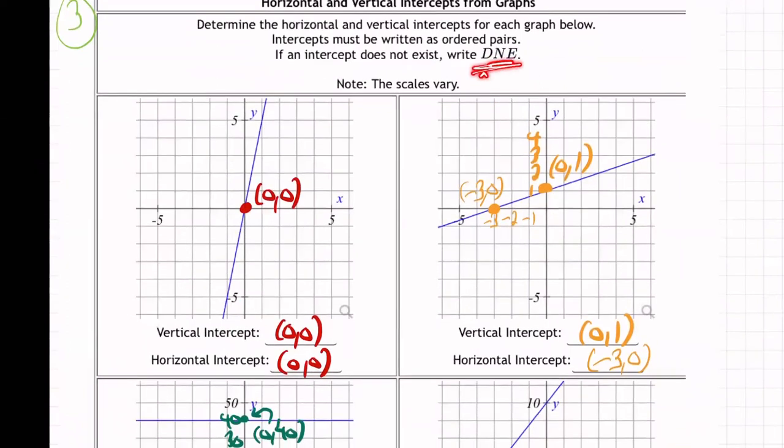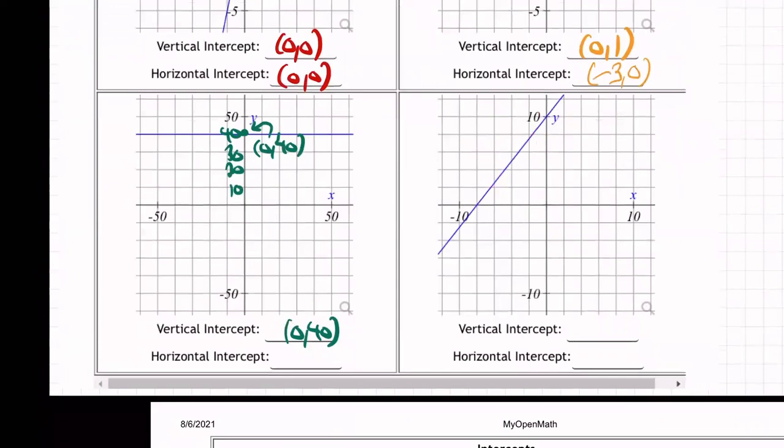Did it say it up here? Oh yeah, I didn't read the fine print. Here it is. If an intercept does not exist, write DNE. So yeah, this one is DNE because that stands for does not exist. It does not exist because the horizontal intercept does not exist. It doesn't hit the horizontal intercept, does it? Here's the horizontal axis. Here's the line up there. They don't touch. Whereas the vertical, it hits the vertical axis right there at 0, 40.